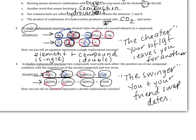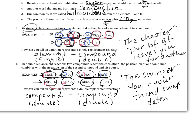So how are you going to identify this swinger reaction where the two front atoms swap places? On the reactants — the left side — you're looking for a compound and a compound. Instead of a single element and a compound like in single replacement, now you've got two compounds, each made of two parts. If you see two compounds on the left-hand side, that is your signal for a double replacement reaction. When you get to class, we'll practice categorizing them.